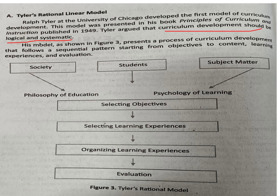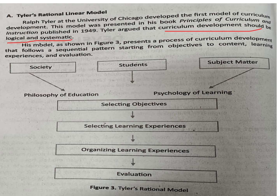The last part of Tyler's model is evaluation. This is one of the most significant parts because evaluation quantifies the quantity and quality of learning acquisition. If after delivery of the teaching-learning process less than 75% of the students have learned the existing competencies, the teachers are advised to administer supplemental discussions for learning augmentation.